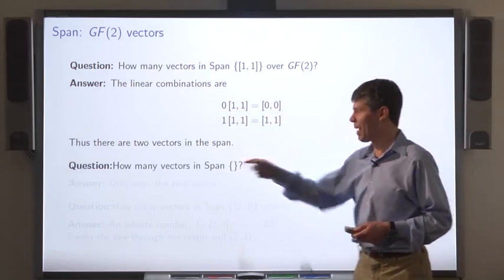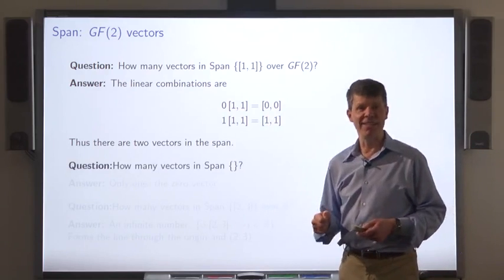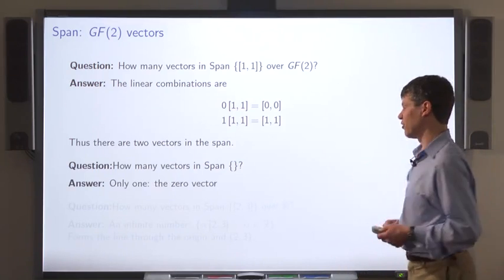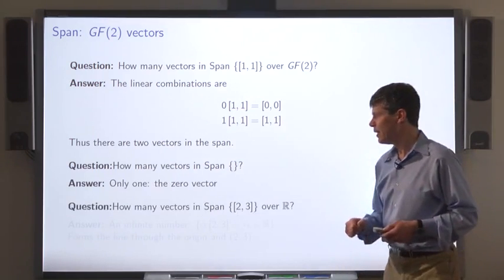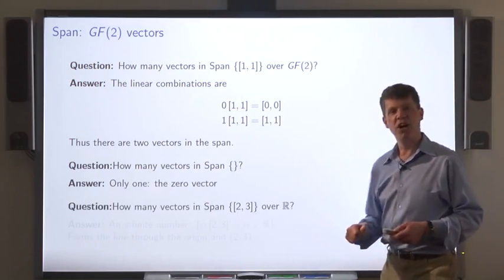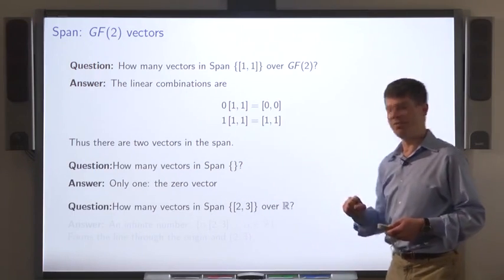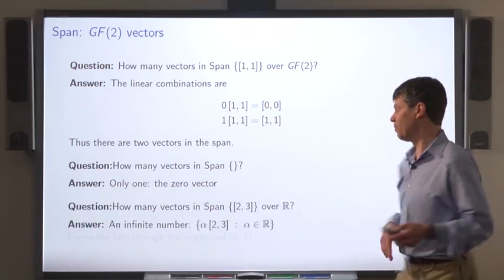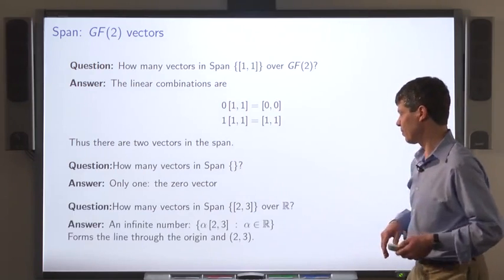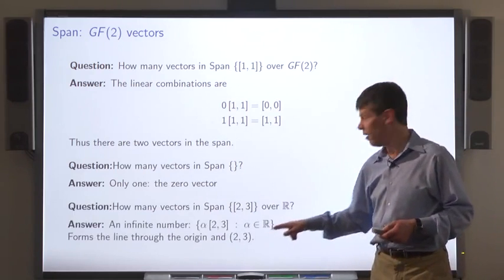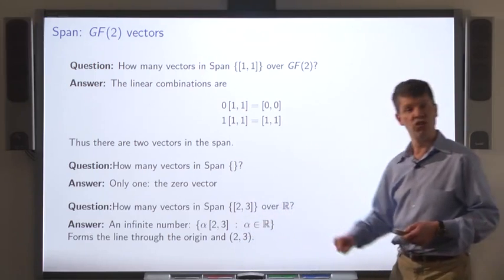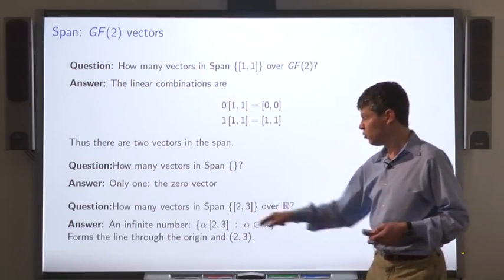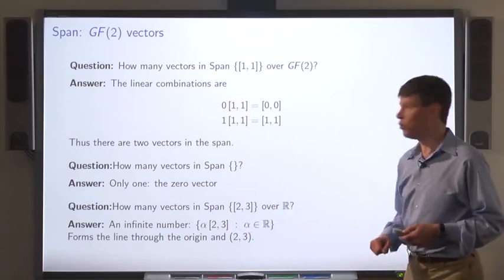How many vectors are there in the span of an empty set? There's only one: the zero vector. How many vectors are there in the span of a single vector over the real numbers? There are an infinite number, and these linear combinations form a line through the origin.